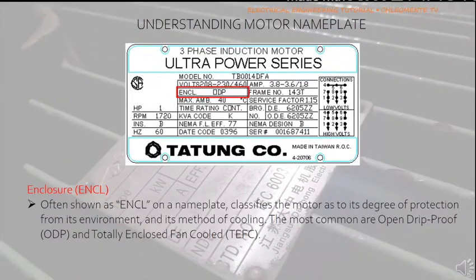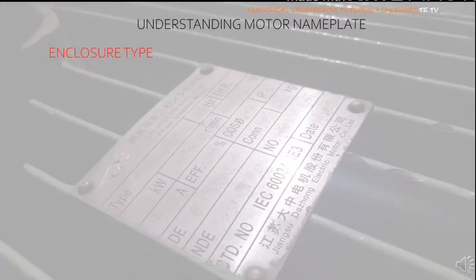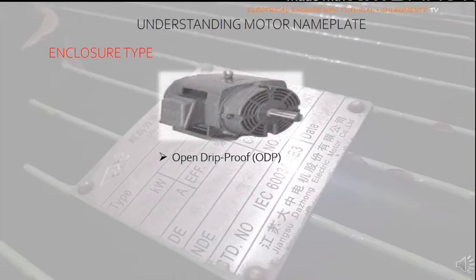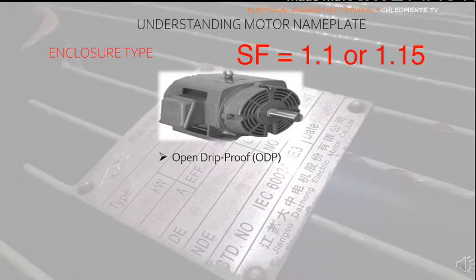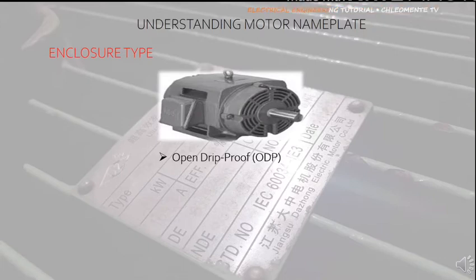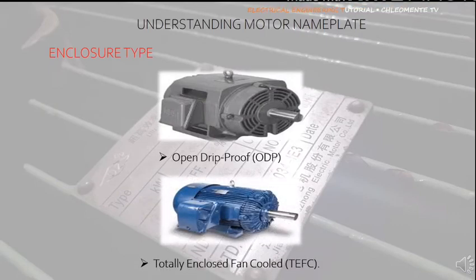Enclosure, denoted by ENCL, classifies the motor by its degree of protection and method of cooling. The most common in industry are ODP (open drip proof) and TEFC (totally enclosed fan cooled). ODP motors typically do not overheat due to openings in the casing through which air flows directly over the winding, making them more efficient with a service factor of 1.1 or 1.15, but they are not recommended for outdoor installation or dusty environments. TEFC motors have totally enclosed chambers cooled by an external fan on the non-drive end, and are highly recommended for outdoor installation.